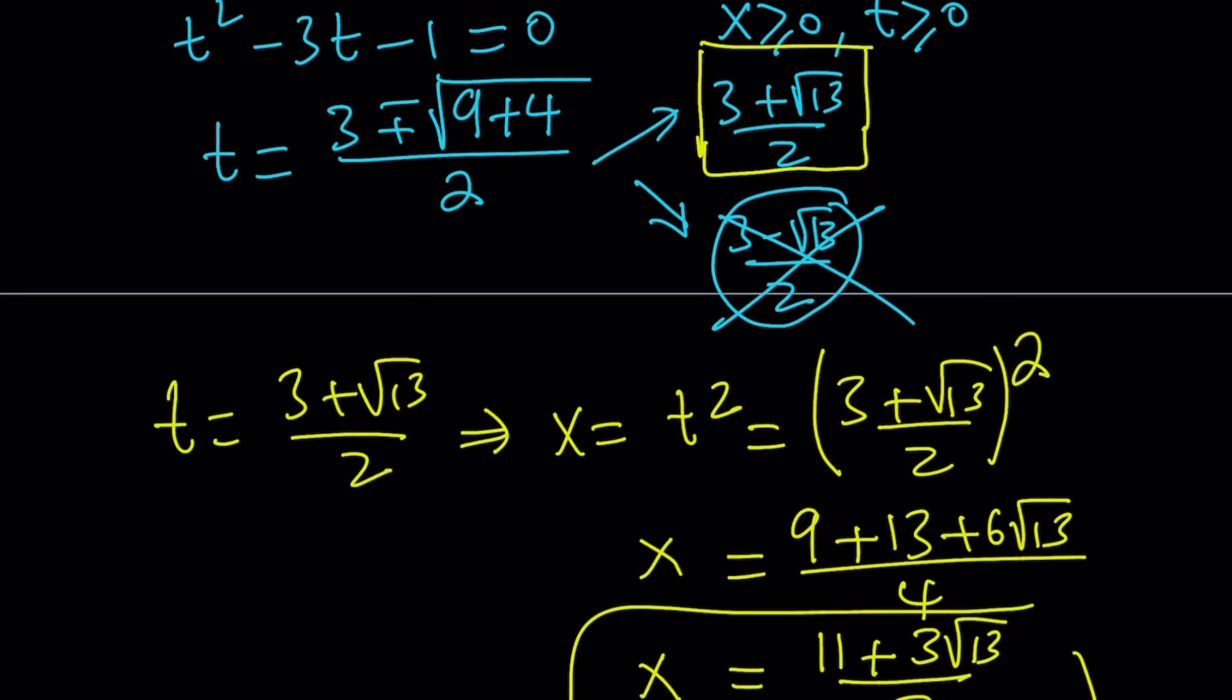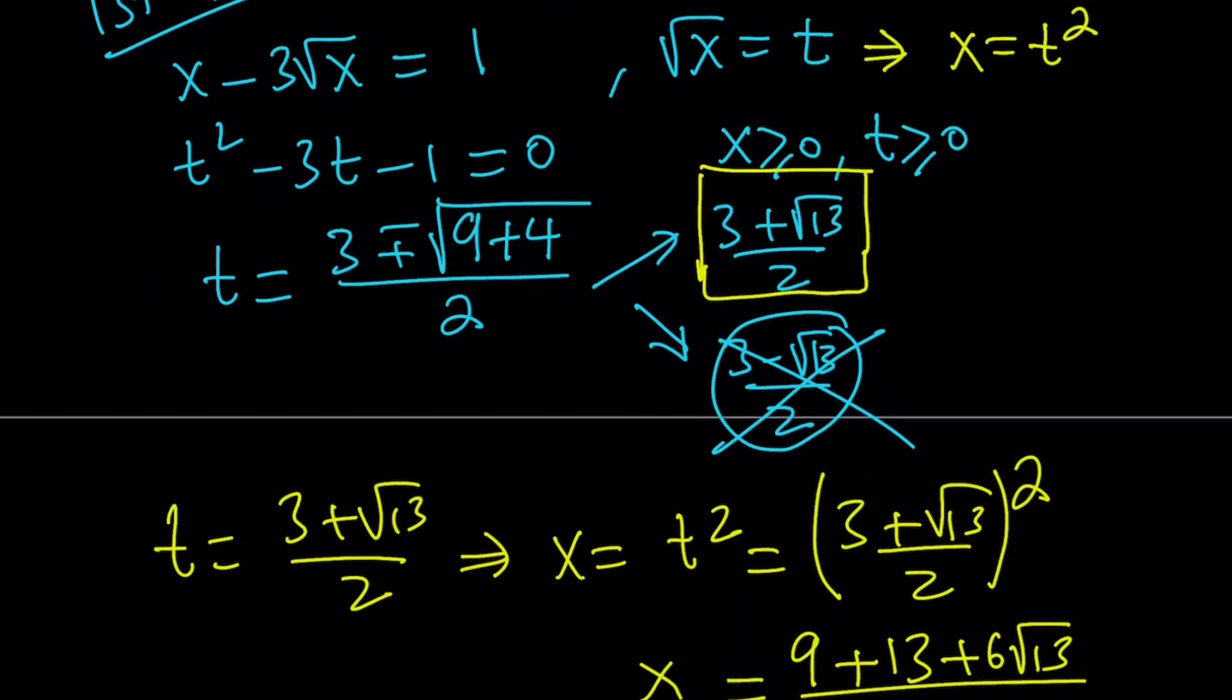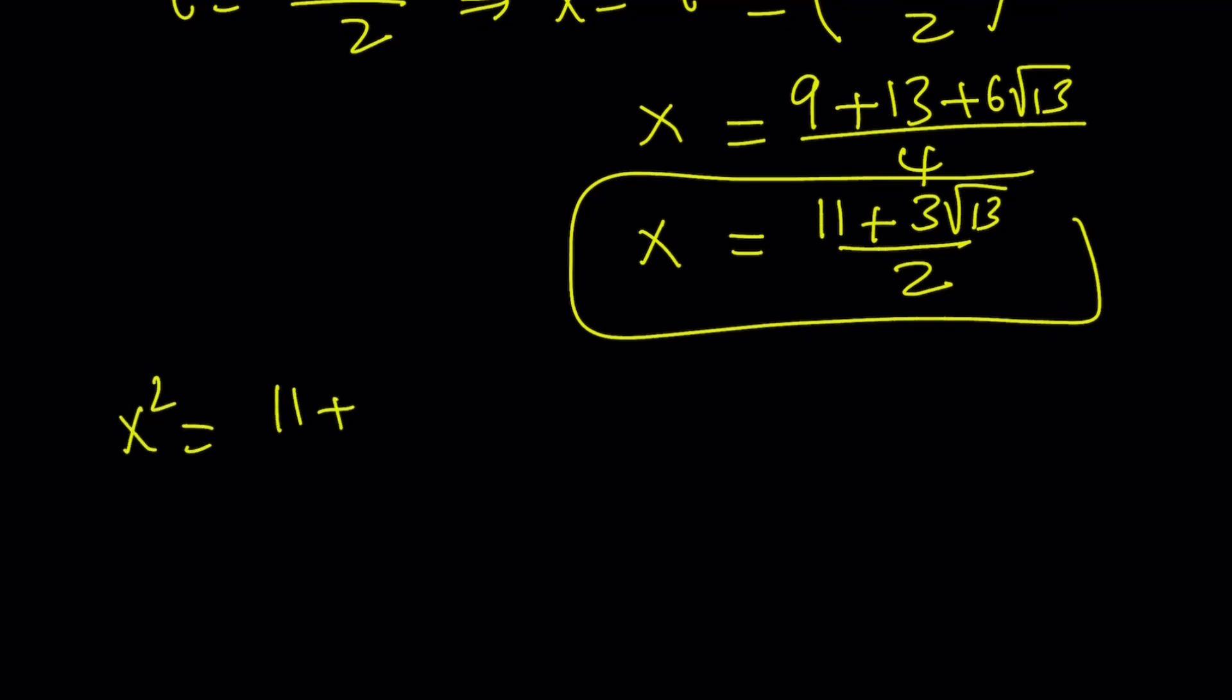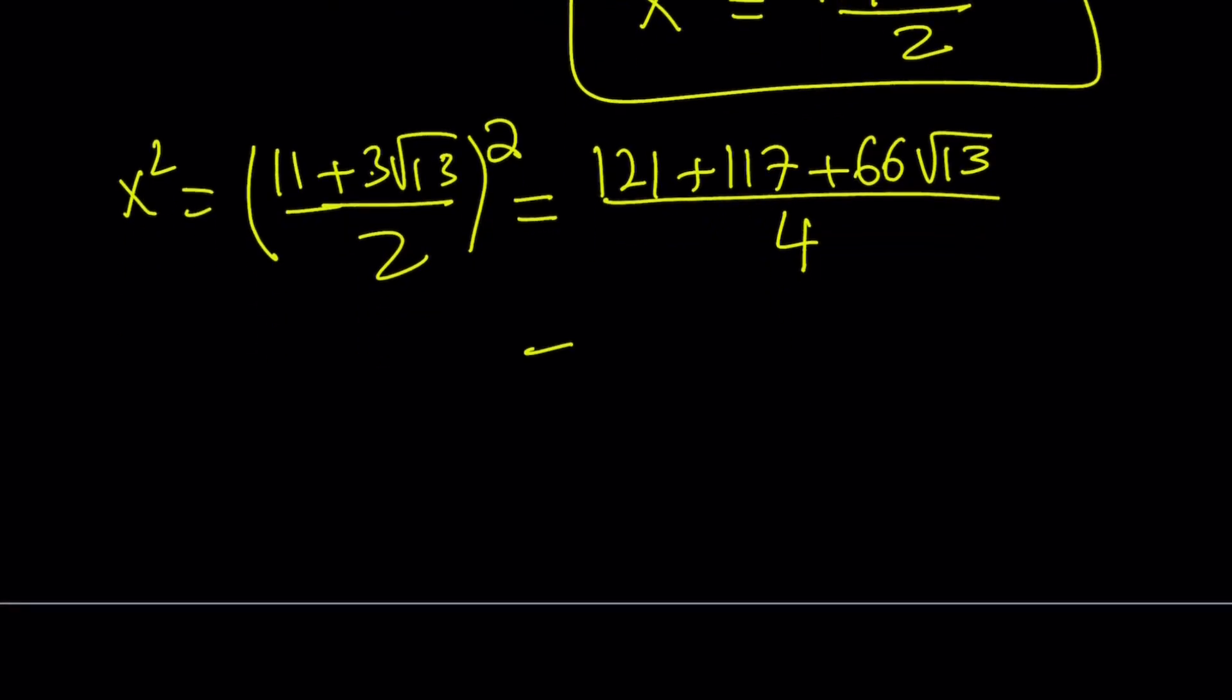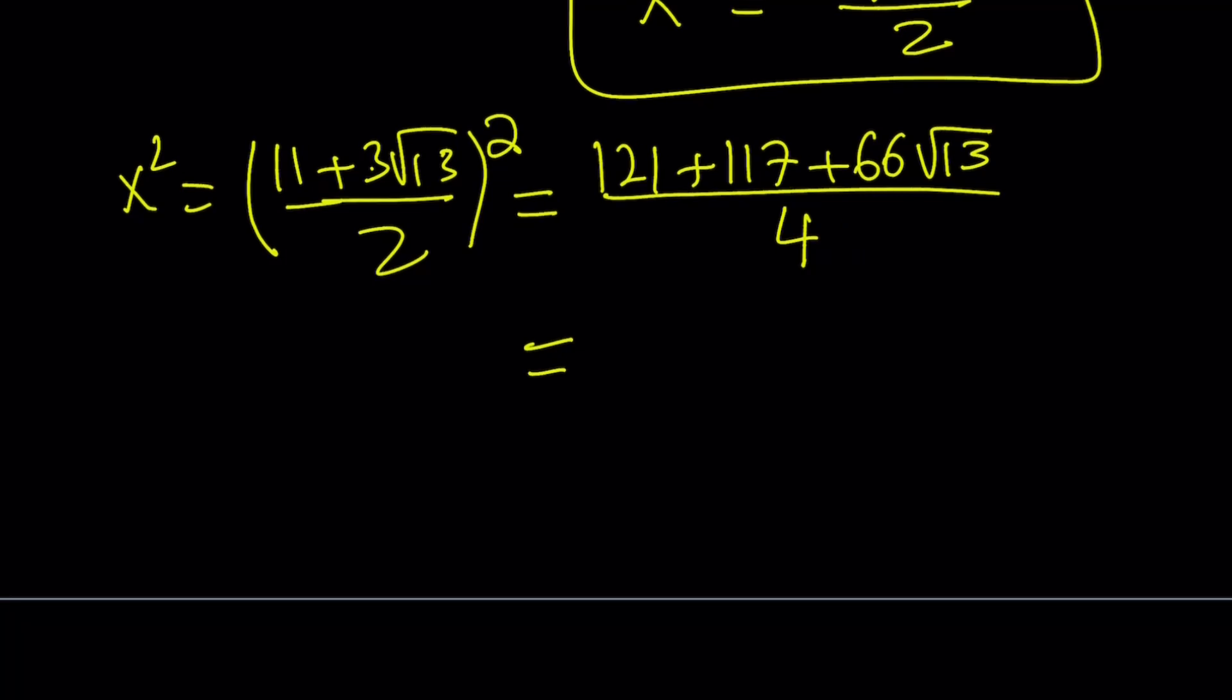But remember, we are trying to evaluate something else. We need to evaluate x squared plus 1 over x squared. But I have the x value, so I can easily find x squared from here. I just need to square this expression one more time. And I know this first method is kind of very brute forcey, but sometimes you don't have an option. So now from here, 11 squared is 121, 9 times 13 is 117, and then their product is 3 times 11 times square root 13 times 2, which gives us 66 root 13. We're going to add it all together and divide by 4.